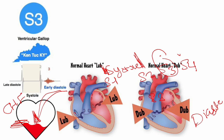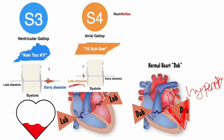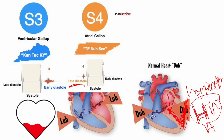S4 also happens in diastole but in late diastole — during the atrial kick, while the atrium is contracting to squeeze the remaining blood into the left ventricle. S4 is mainly caused by a stiff left ventricle. Any hypertrophy will cause a stiff ventricle. Hypertension causes hypertrophy and a stiff heart, which causes an extra S4. It's very high yield — whenever you see a murmur question, look at the blood pressure. Aortic stenosis can also cause an extra S4 in addition to the stenosis murmur.